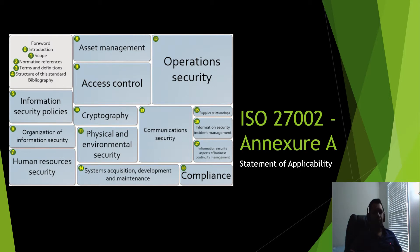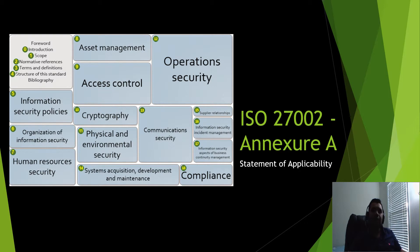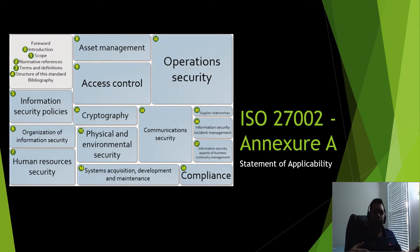Section 7 is human resource security. This is all about HR security, covering onboarding — making sure the onboarding process is secure — then during employment, ensuring employees receive security awareness training, and finally termination, which is the most critical phase: how you terminate access and retrieve company assets.